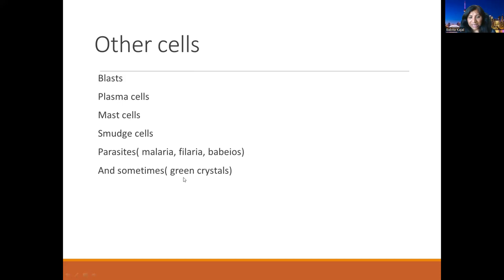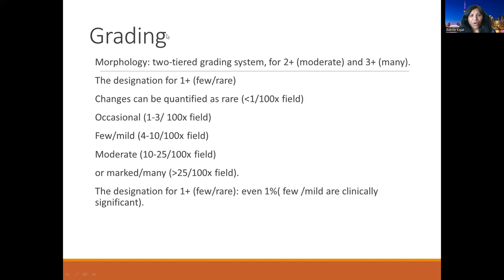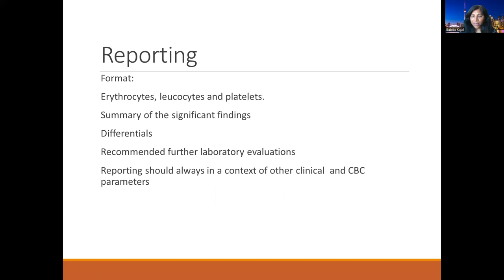For parasites, we can see malaria, filariasis, trypanosomiasis, and very rarely green crystals within neutrophils. Depending upon all the morphology and numbers, we can grade those findings. Morphologically, we have a grading system: one plus for few/rare, two pluses for moderate, three pluses for many. Quantitatively: rare is less than one per 100x field; occasional is one to three per 100x; few or mild is four to ten per 100x; moderate is ten to twenty per 100x; and more than twenty means many. Schistocytes are reported as few/rare, and they are clinically significant even if very mild.